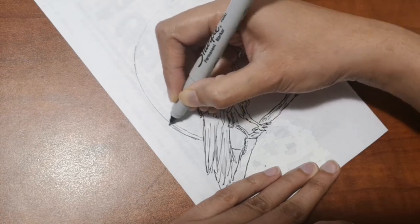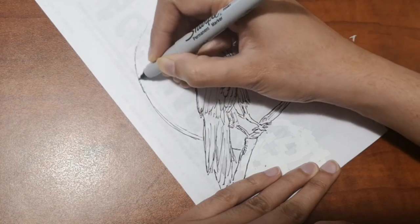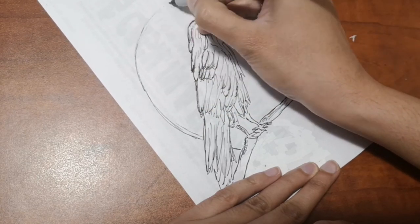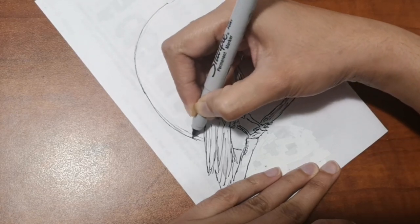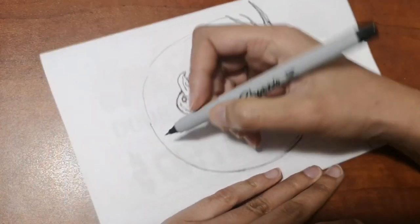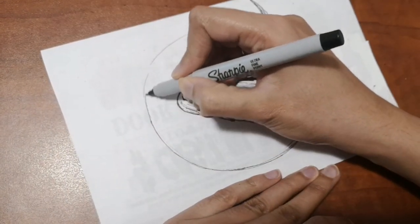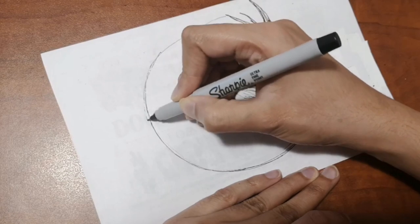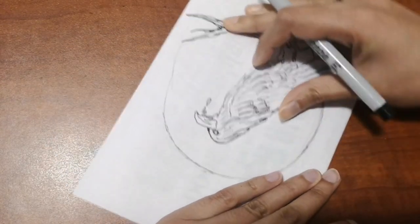I'm going to add a moon behind the crow so it looks a little spooky. You can let me know in the comment section below what you think of this drawing and if you find it easy to draw.